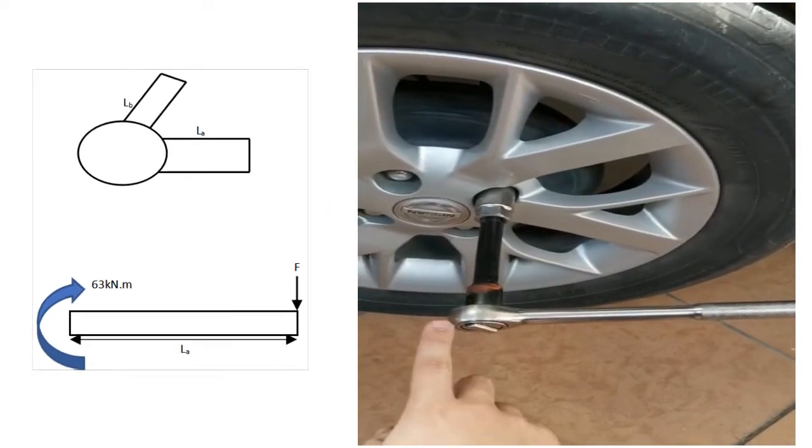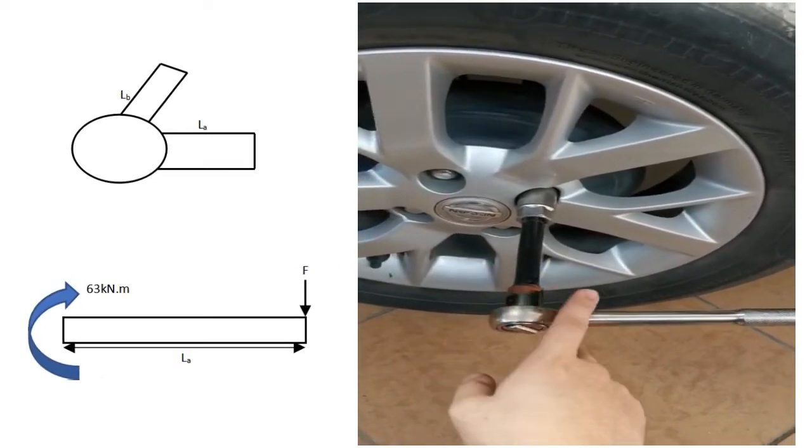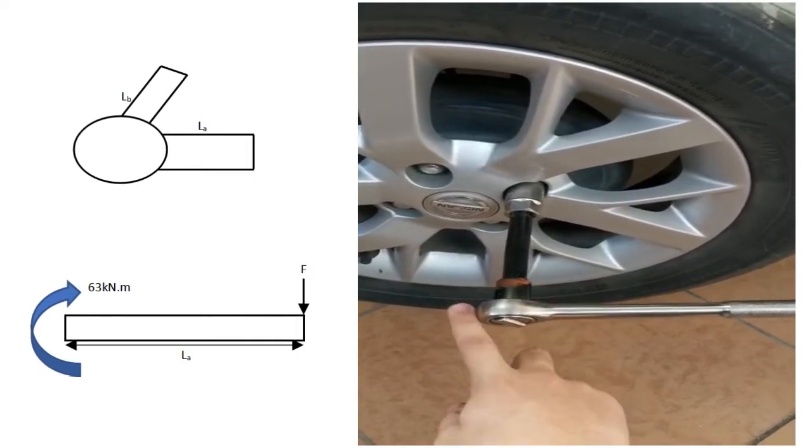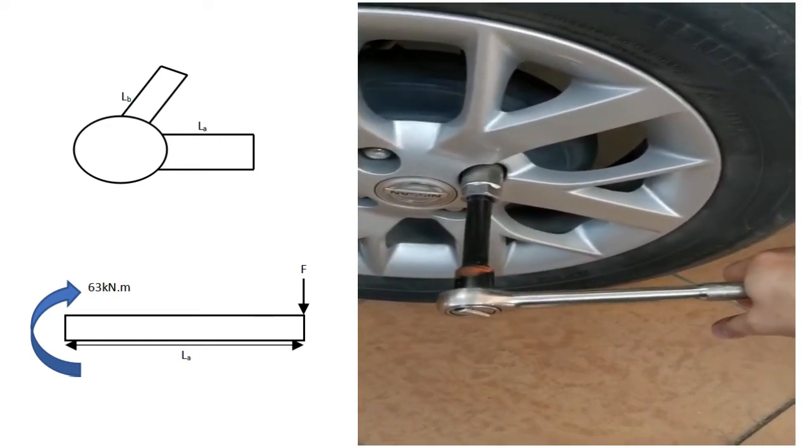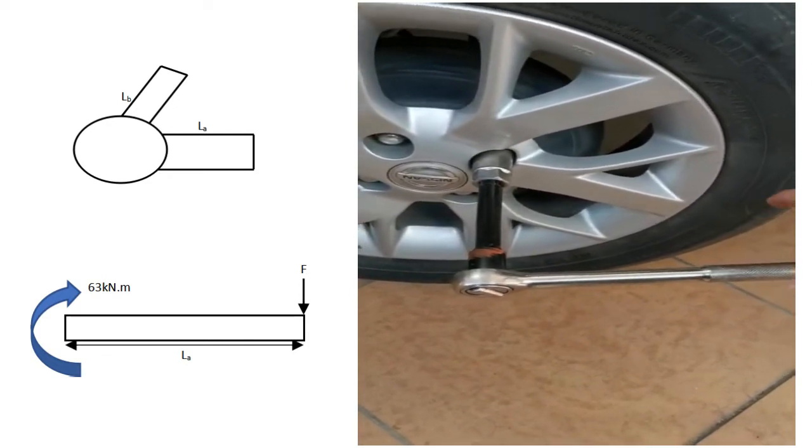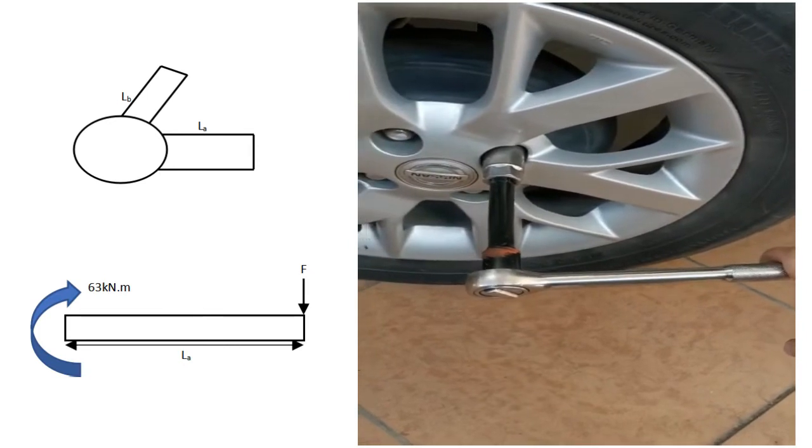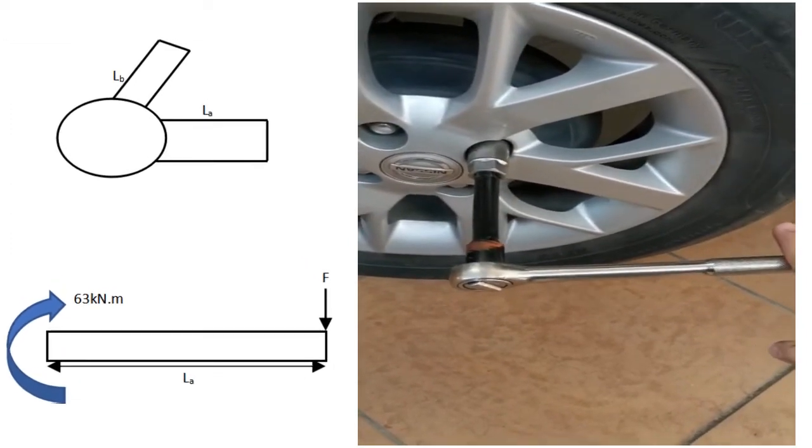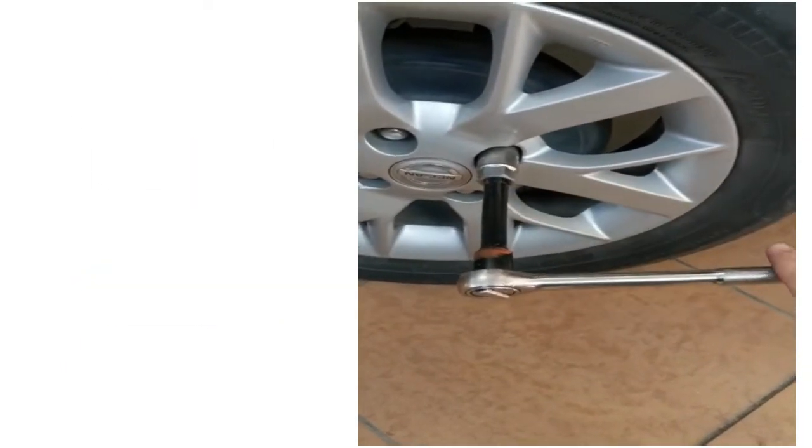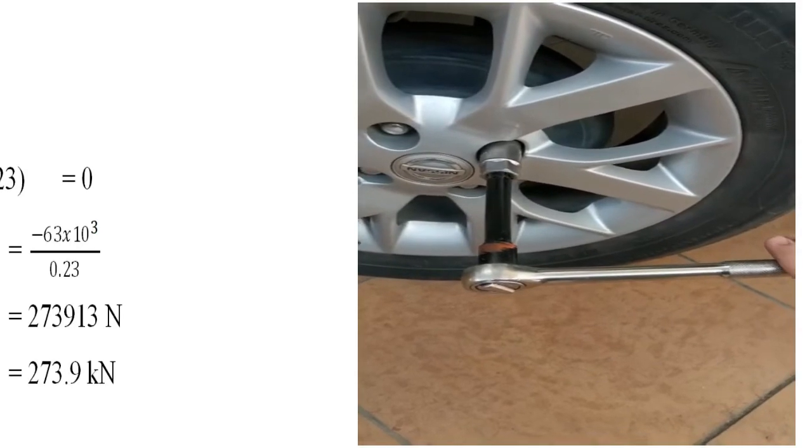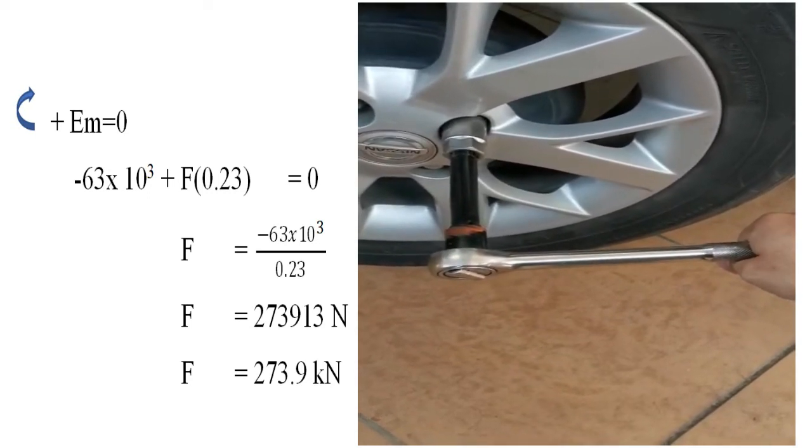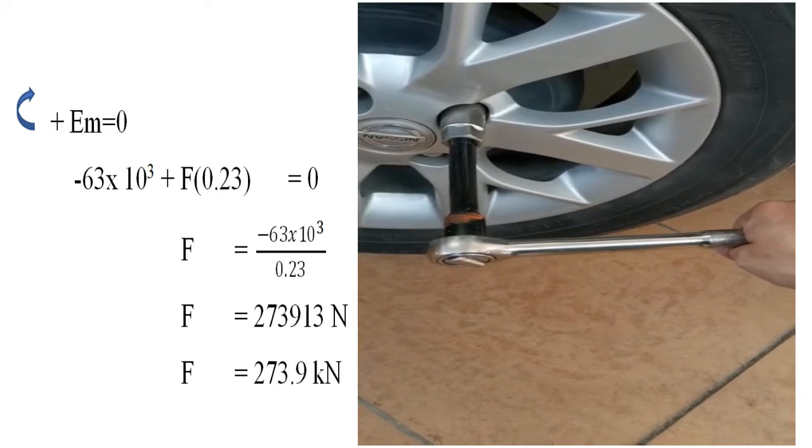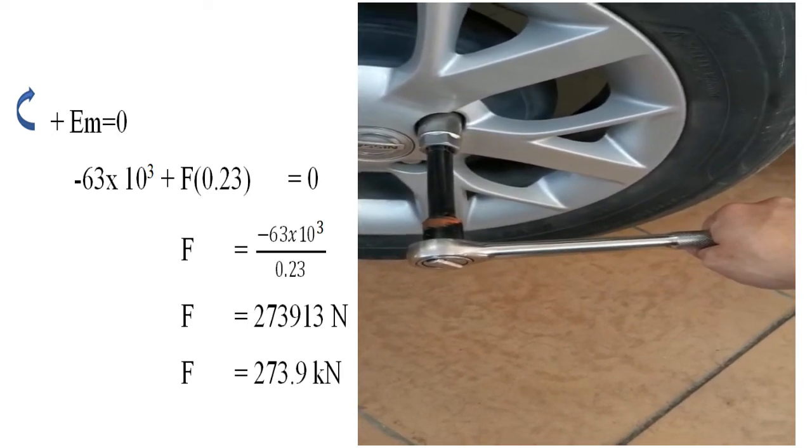So we assume the shaft will be broken at T equal to 63kN per meter. The structure is the example of structure is like this. The maximum force in the torque of the internal torque is at here and it is 63kN per meter. And the length from here to here is 230mm. The force exerted at here is unknown. So we will find the maximum force exerted at here. By using the equation of moment we can determine that the maximum force to be exerted at here. It will be broken when the force at here is 273.9kN.